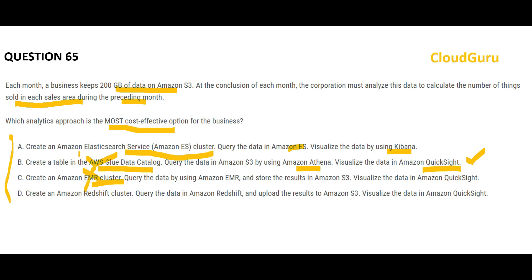Option D suggests using an Amazon Redshift cluster, which is like recommending a BMW — expensive and overkill for this use case. Why would you create a Redshift cluster, load the data, and then visualize in QuickSight, when you can directly put Glue and Athena into play and do it more cheaply? To summarize: D is BMW, C is Mercedes, A is a Toyota Corolla, and B is the cheapest option — the most cost-effective solution. B is the final answer.